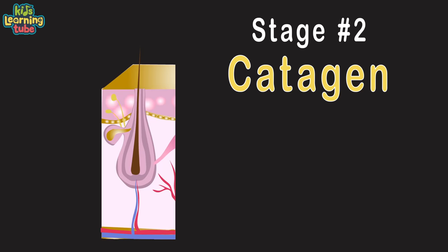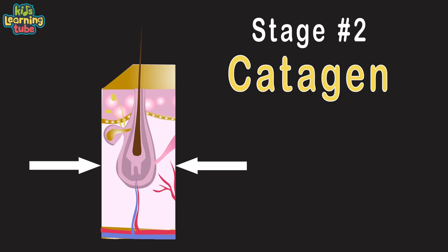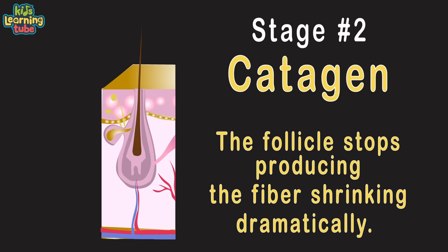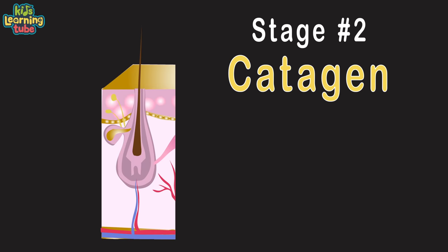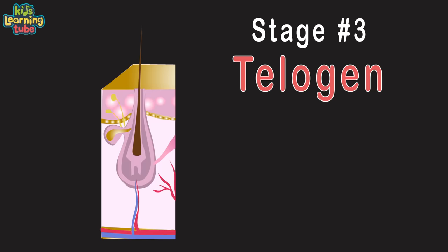The catagen stage begins when the anagen stage ends, when the lower portion of the hair follicle regresses and hair growth ends. The follicle stops producing the fiber, shrinking dramatically, ending the hair's growth. This stage lasts about two weeks. Then the telogen phase begins, when detached hair does rest. This lasts for about three months.